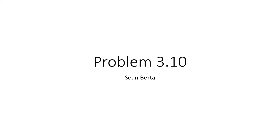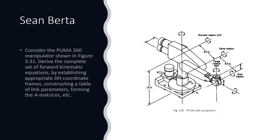Hello, my name is Sean Burda, and this is a video on how to solve a robotic system using DH convention. In this problem, we will be looking at the Puma 260 manipulator, shown right here, and we will be deriving a complete set of forward kinematic equations by establishing the appropriate DH coordinate frames, constructing the DH table, and forming A matrices.